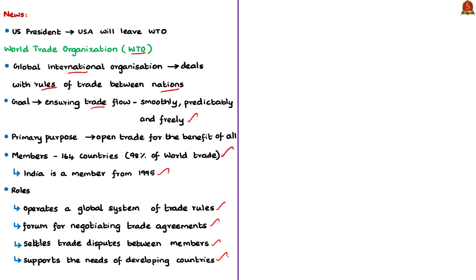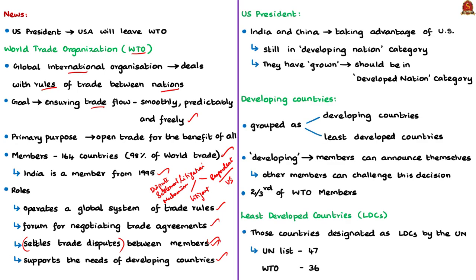When there is a trade dispute among WTO members, they can file litigation in the WTO and it goes through the dispute settling mechanism. There will be one litigant and one respondent, and the case will be settled in favor of either. In this scenario, when the litigation is against the USA, the US will be the respondent. This is where the US president has said that the US loses almost every case in the WTO, and he is threatening to leave the organization.